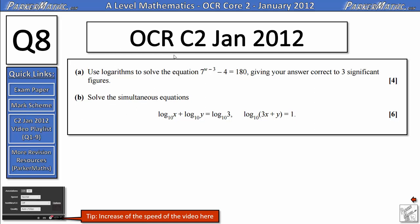Hi, I'm Mr. Parker and this is question 8 on the OCR Core 2 paper from January 2012. In part A we need to use logarithms to solve the equation 7^(w-3) - 4 = 180, giving your answer correct to three significant figures. And in part B we need to solve the simultaneous equations log₁₀(x) + log₁₀(y) = log₁₀(3), and log₁₀(3x + y) = 1.